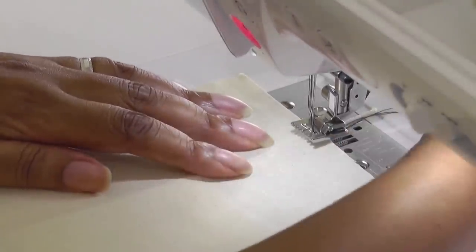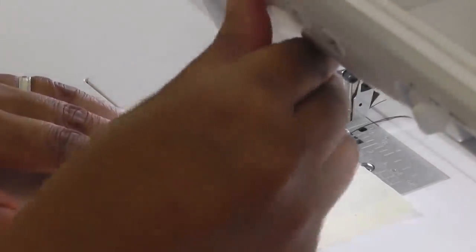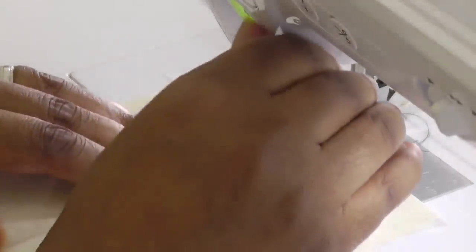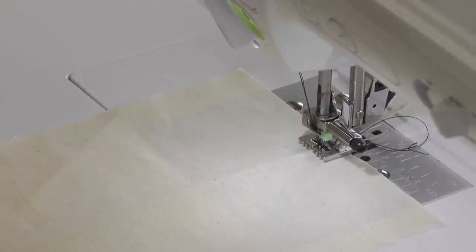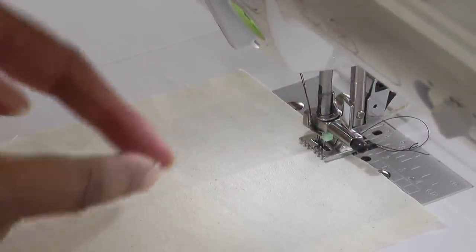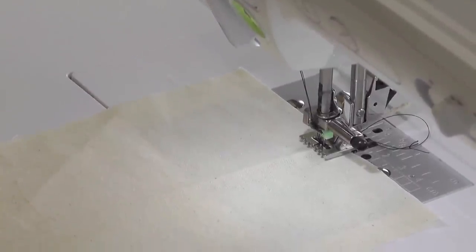Put it onto my foot, lower my foot and then make sure my needles are down and then start sewing. So your cord is sitting in the middle here and then the twin needles are going to stitch more or less on either side but obviously it's going to be caught by one needle because that's what you want to hold it in place.